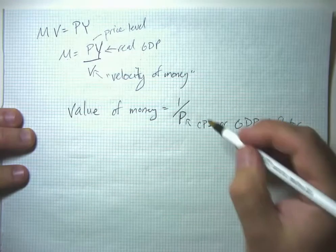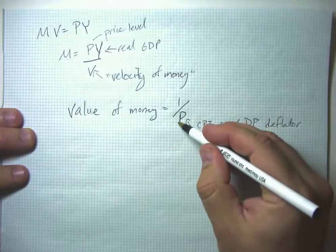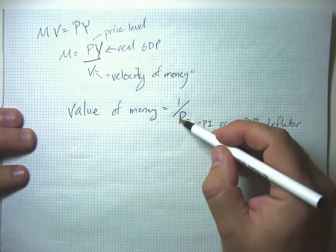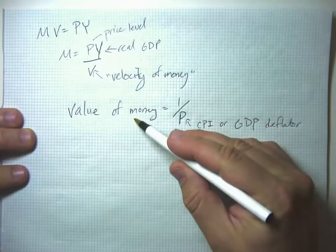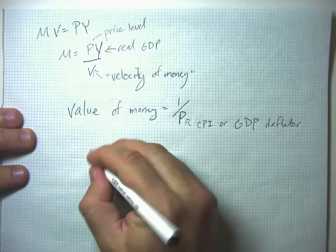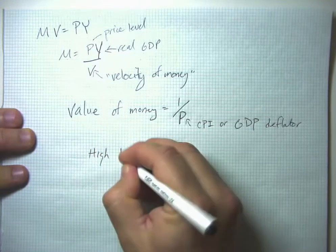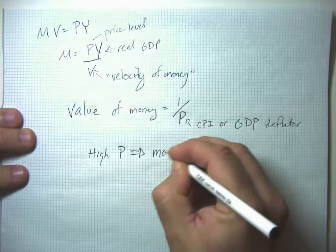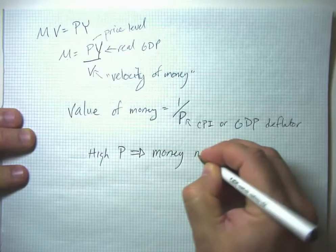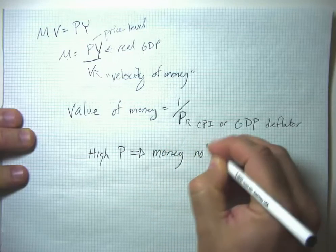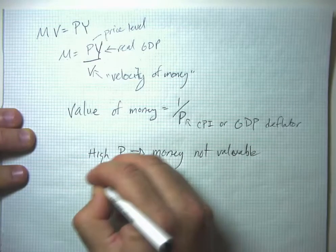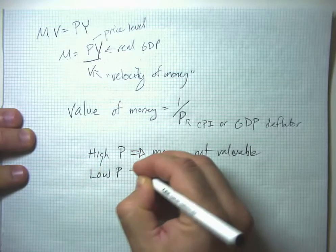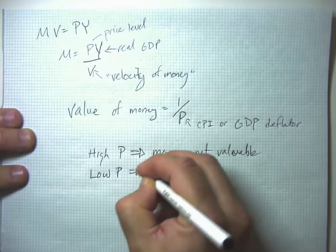Because when the price level is high, it takes a lot of money to buy a certain amount of goods, so money is not very valuable. So high price level means money not valuable or not as valuable. Or a low price level means money is more valuable.